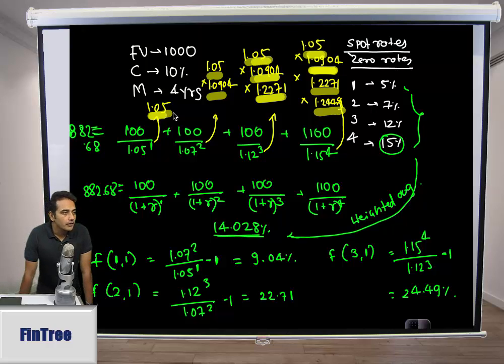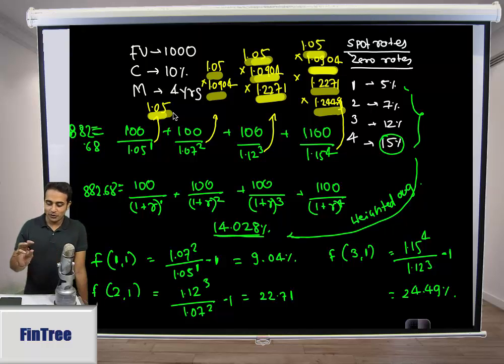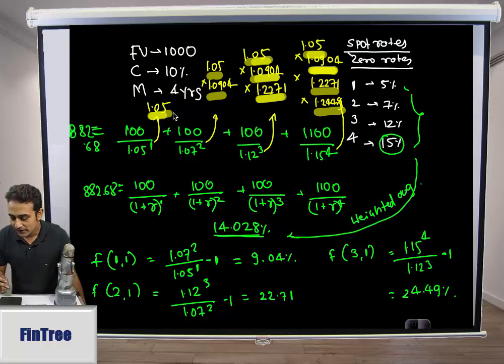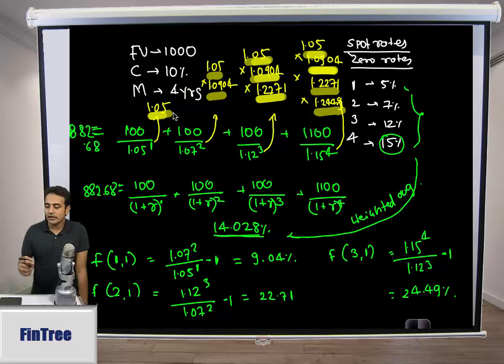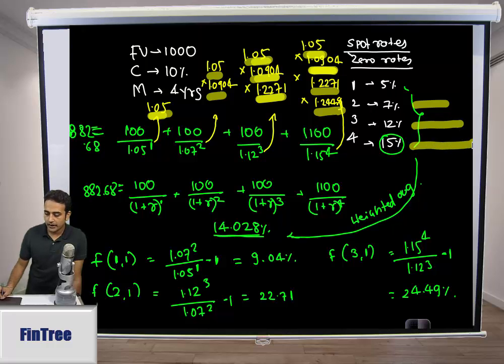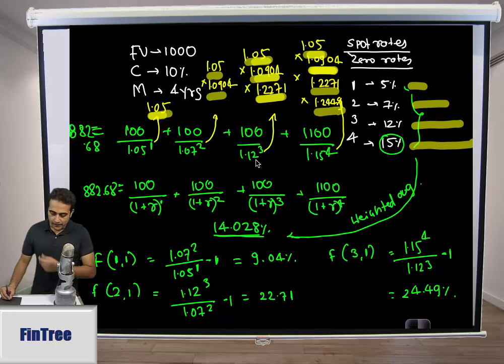Student asks: We have 1.07 raised to 2, so we're not using 1.05 × 1.07, is that right? You can't, because this 7% is a rate for both years. You can't use it only for the second year. Spot rate doesn't mean it's a rate applicable from year one to year two - it means this is the rate applicable for both years. This 12% is applicable for three years, 15% for four years, and 5% for one year. If you do 1.12^3 and multiply these three forward rate numbers, the value should be the same.